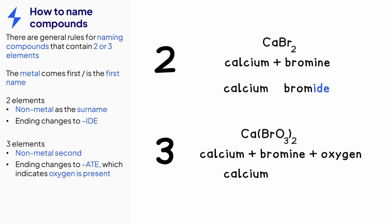Ca(BrO3)2 contains three elements, which means that the non-metal bromine is the second name or surname of the compound. But the oxygen needs to be considered. So, the element bromine changes to bromate to show that it is chemically bonded in a compound that includes oxygen. This means that Ca(BrO3)2 is calcium bromate.